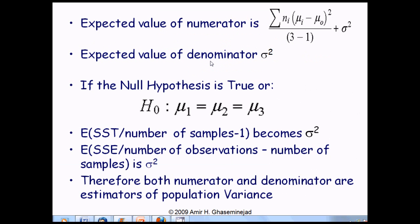It turns out that the expected value of the numerator is the variance of the population plus a term related to the deviation of the mean of each subpopulation from the overall mean of all population members. The expected value of the denominator is the variance of all members of the three populations. However, if the null hypothesis is true, the means of the three subpopulations are identical and equal to the overall mean, making that extra term in the numerator equal to zero. Therefore, when the null hypothesis is correct, both numerator and denominator are expected to be close to each other, and the proposed statistic would be close to one.